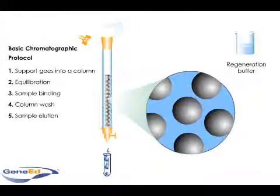If a single buffer is used, the process is referred to as isocratic separation. If multiple buffers are used, it is called a gradient.